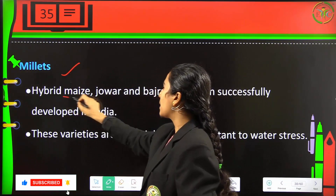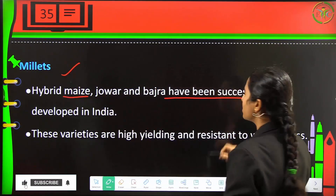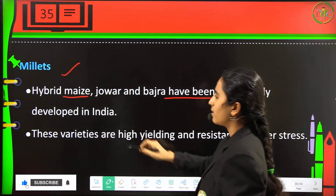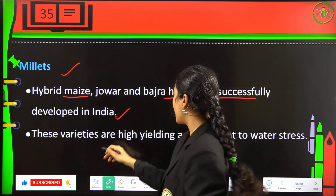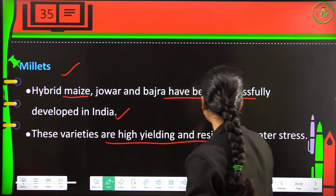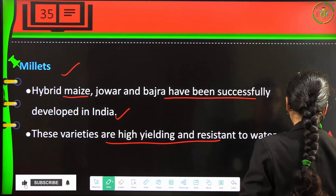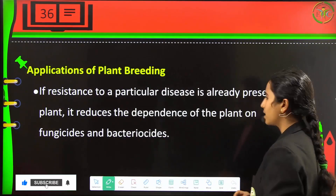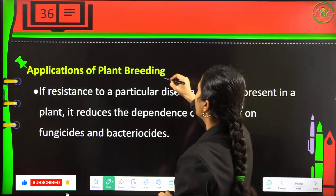Similarly for millets, hybrid maize, jowar, and bajra have been successfully developed in India. These varieties are high yielding and resistant to water stress, meaning they can grow under low water conditions.